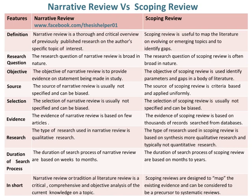The duration of the search process of narrative review is based on weeks to months. The duration of the search process of scoping review is based on months to years. In short, narrative review or traditional literature review is a critical, comprehensive, and objective analysis of the current knowledge on a topic. Whereas, scoping reviews are designed to map the existing evidence and can be considered to be a precursor to systematic reviews.